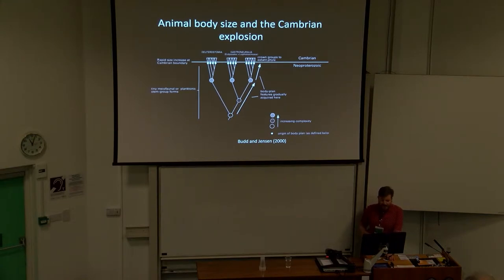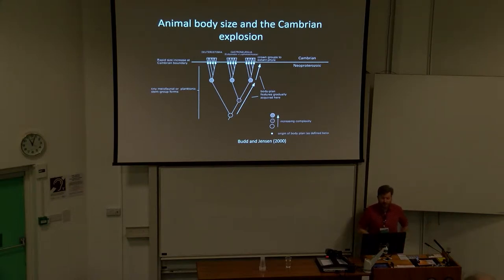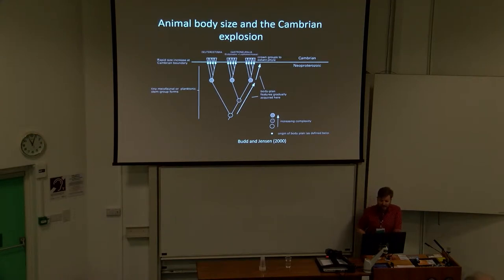This is a classic figure from Budd and Jensen from 2000, where one of the hypotheses they discussed — although we're not too fond of — was that primitively bilaterians were tiny and meiofaunal and then transitioned to large body sizes independently of each other near the base of the Cambrian.